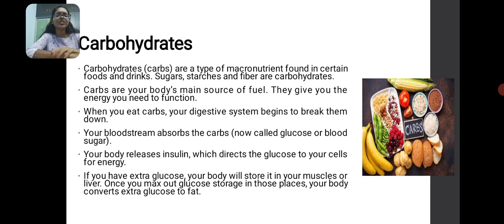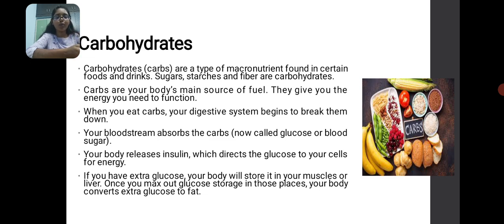Now we are going to see about some major nutrients — macronutrients. Carbohydrates, also known as carbs, are sugars, starches and fibers. Carbs are the main source of fuel which gives the energy you need to function. When you eat carbs, they reach the digestive system and begin to break down as glucose, or blood sugar, which is absorbed by the cells via the hormone insulin, produced by the pancreas. If you have extra glucose in the body it can be stored as fat and utilized later during starvation.